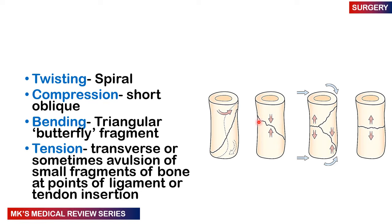As you can see here, you have a spiral type from compressive force, a twisting and bending force pattern, and of course a tension force which can avulse different structures.